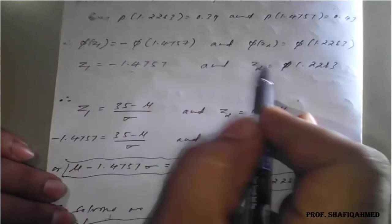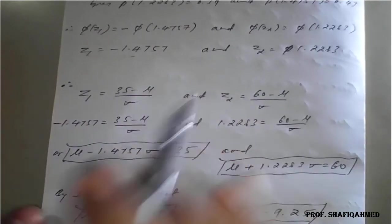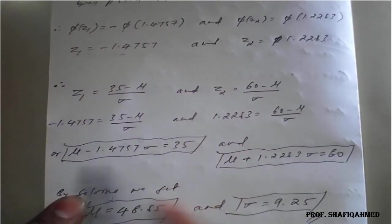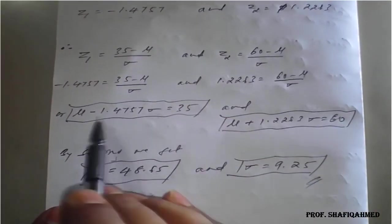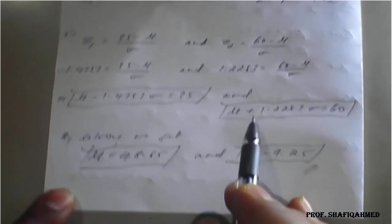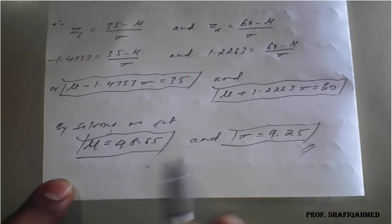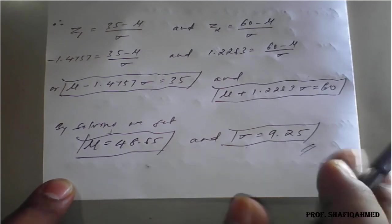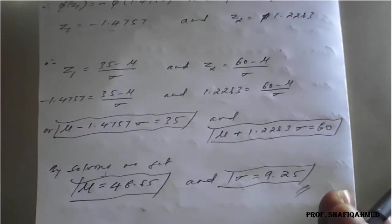So this Z1 and Z2 we need to apply in the expression where we have taken Z1 and Z2, apply and rearrange the expressions. So we will get two simultaneous equations in terms of mu and standard deviation, that is mu and rho. So using calculator, we will get the answer and this is the required mean and standard deviation of the given question.